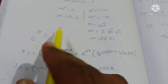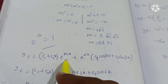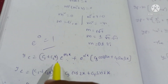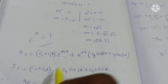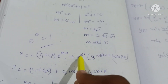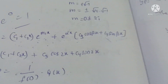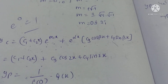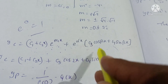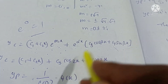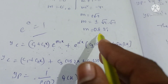m equals 0 gives two equal roots. The complementary function yc uses the formula: for equal roots, c1 plus c2 x into e to the power m1 x; since m1 equals 0, e to the power 0 is 1. For two complex roots, e to the power alpha x into c3 cos(beta x) plus c4 sin(beta x). With alpha equals 0 and beta equals 2: yc equals (c1 plus c2 x) plus c3 cos(2x) plus c4 sin(2x).